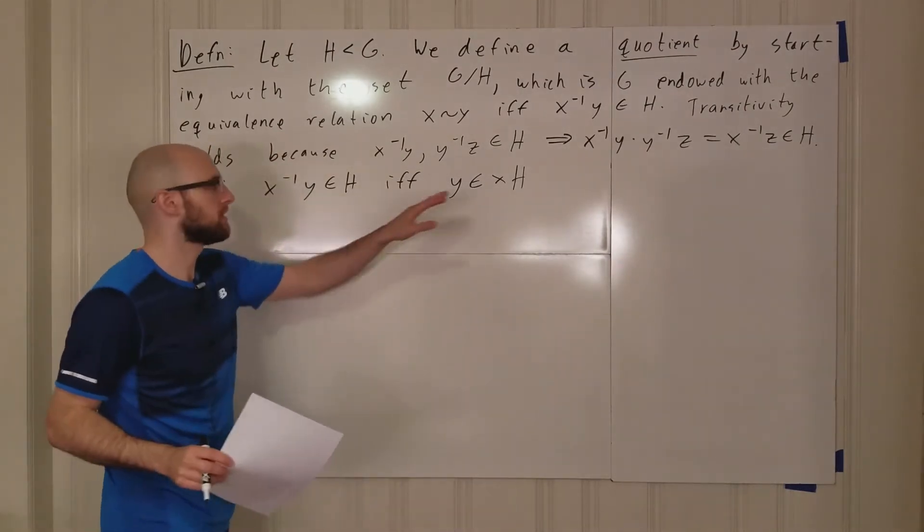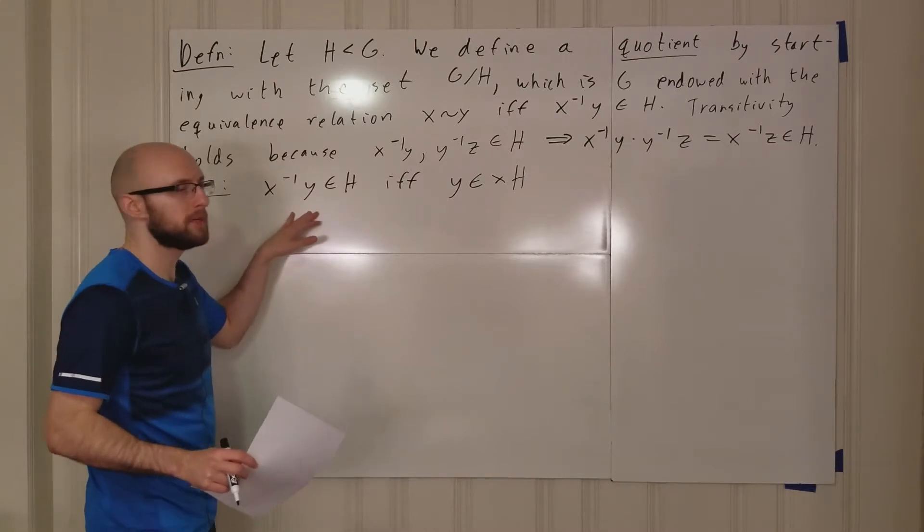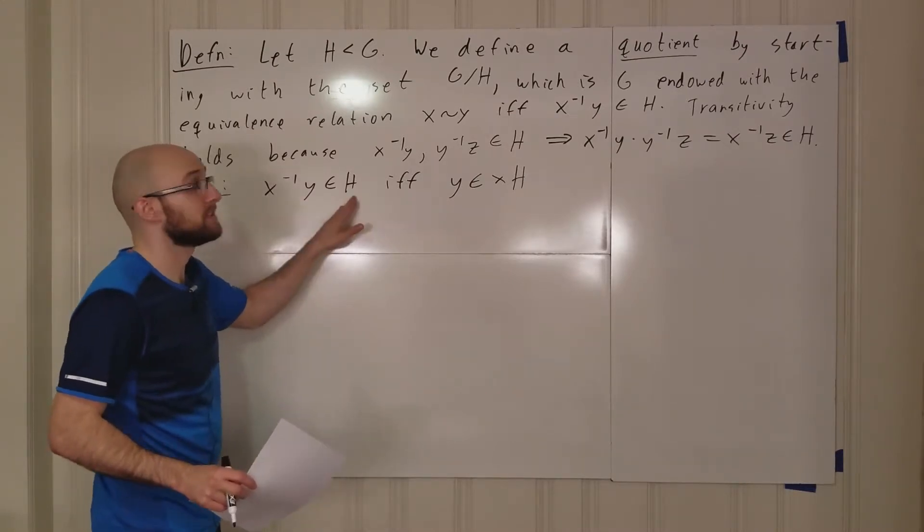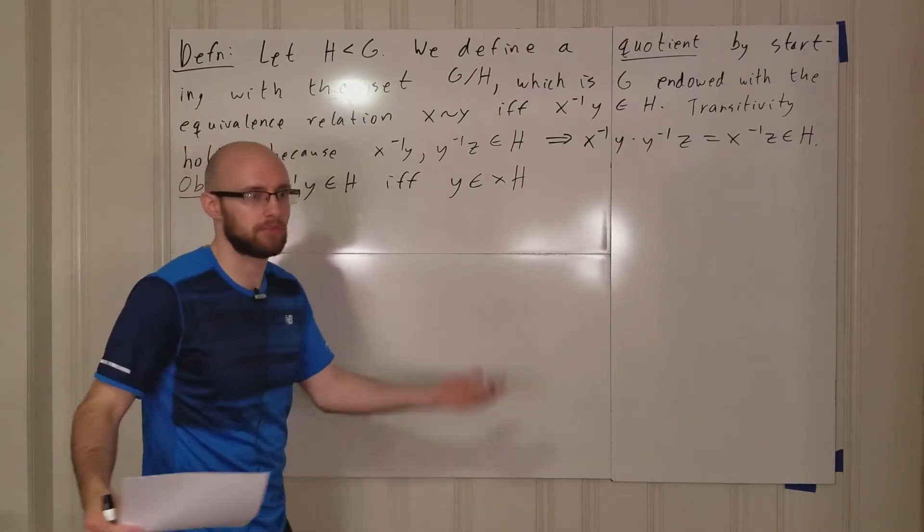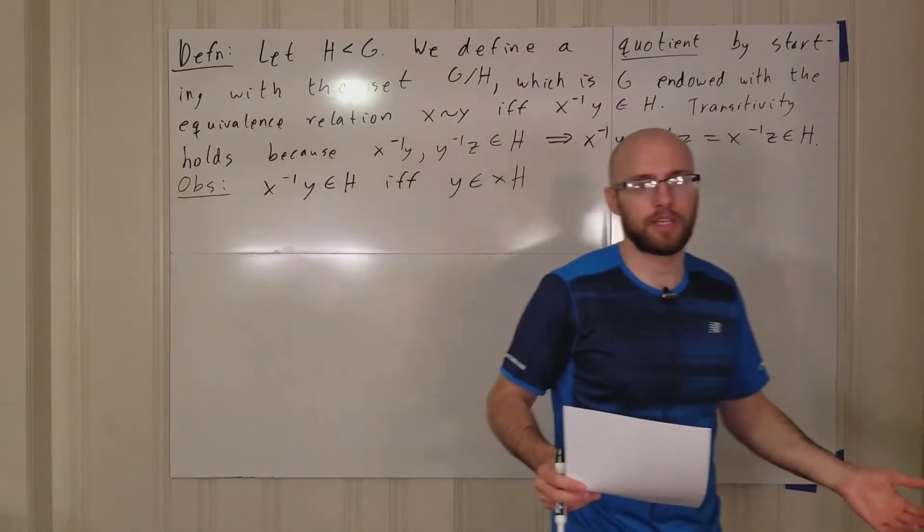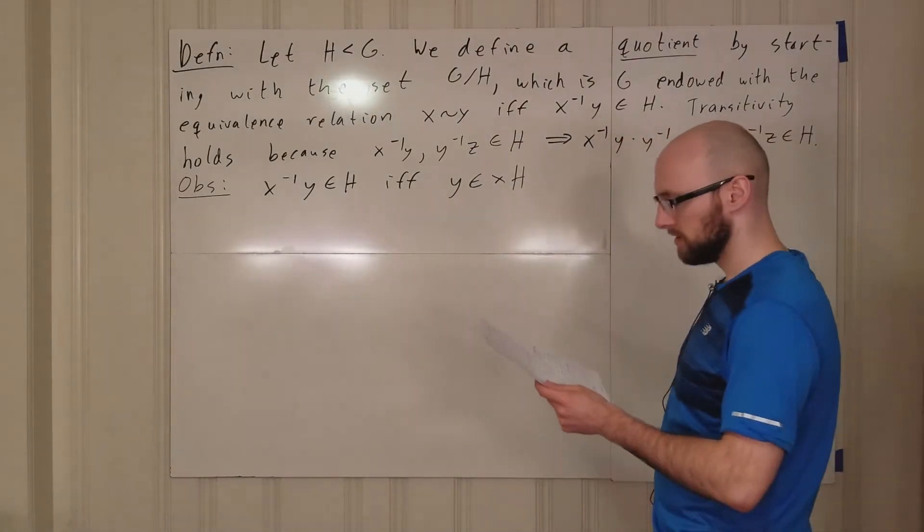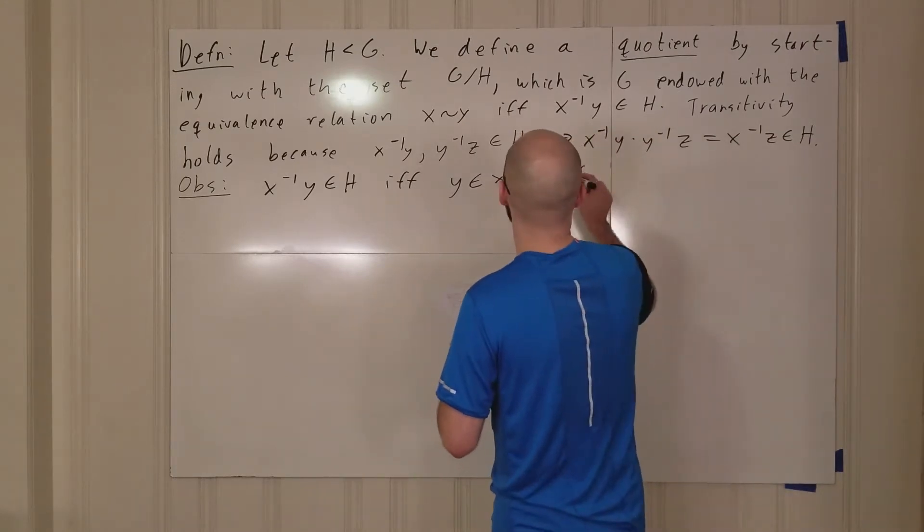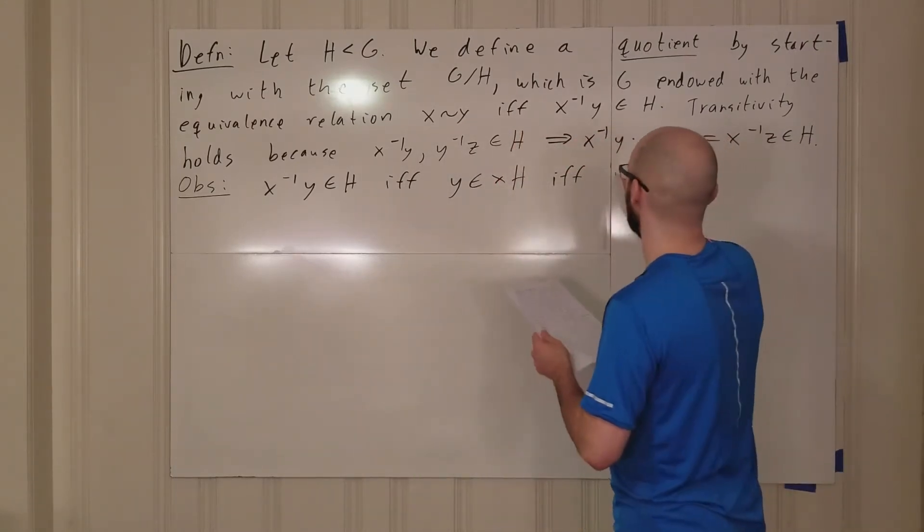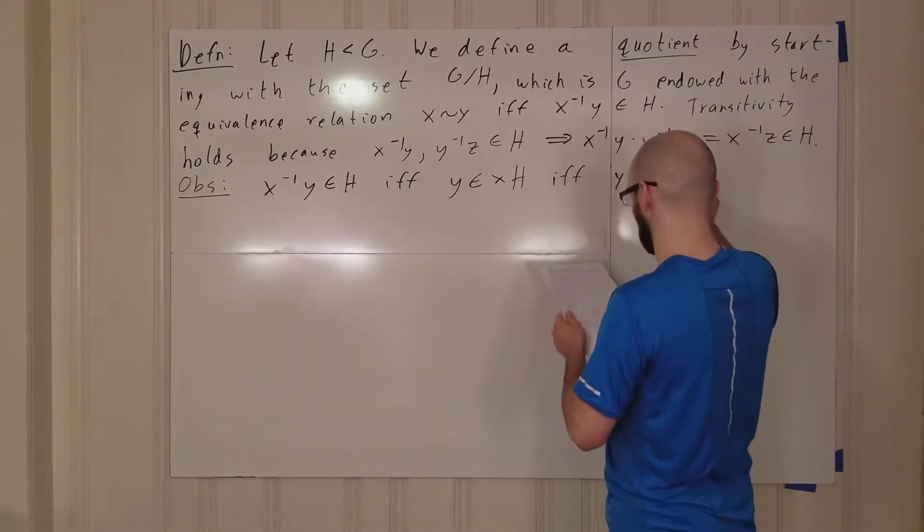You have to be a little careful when you're doing computations like this involving both elements of a group and subgroups of a group, but you can do these and it is good to be comfortable doing them. This is if and only if, so if y is in xH that means that yH is equal to xH.